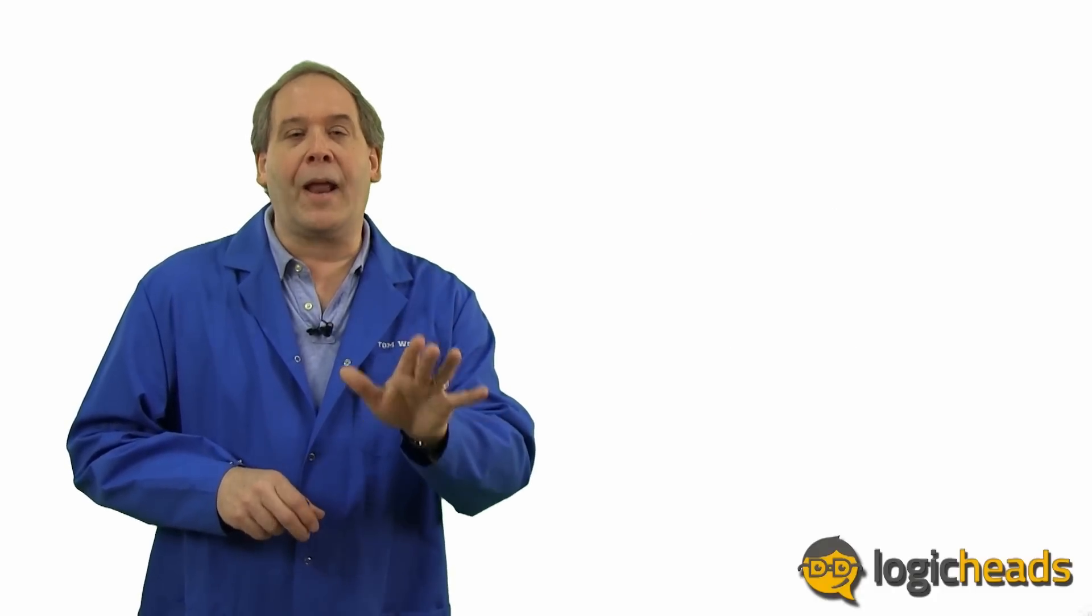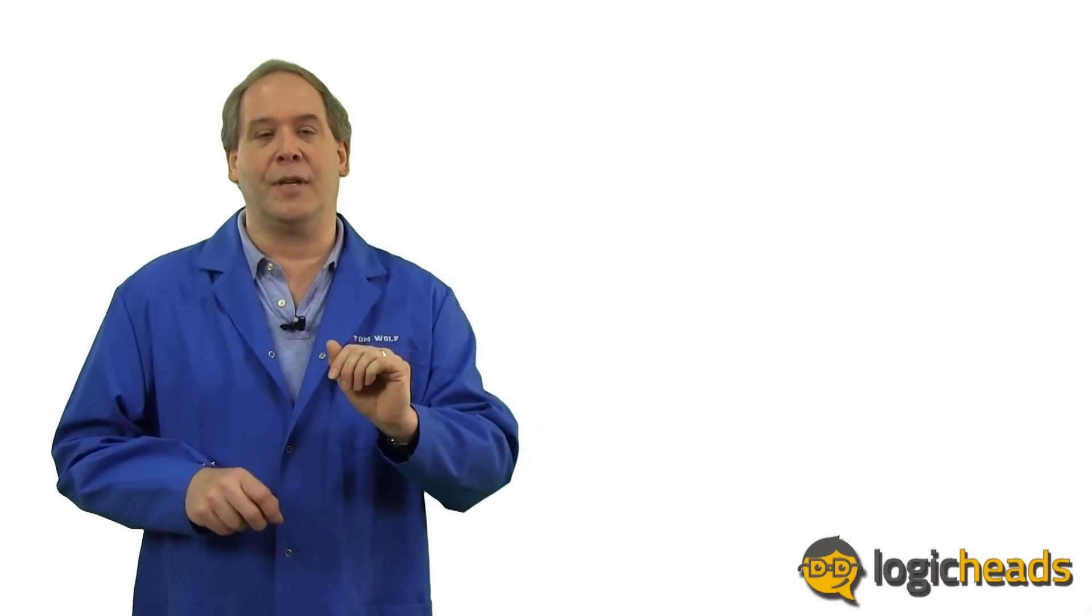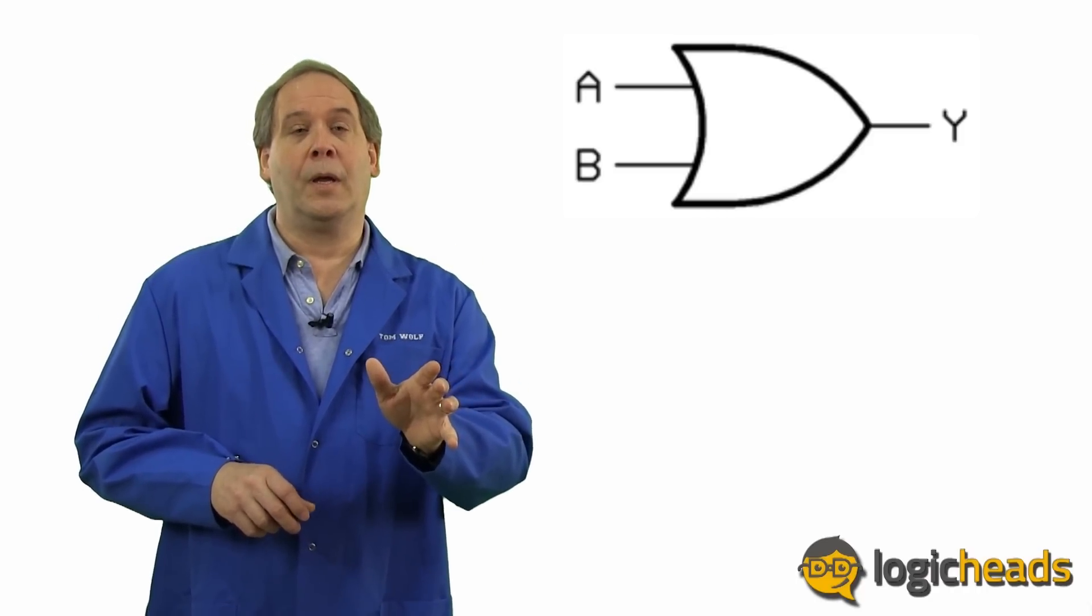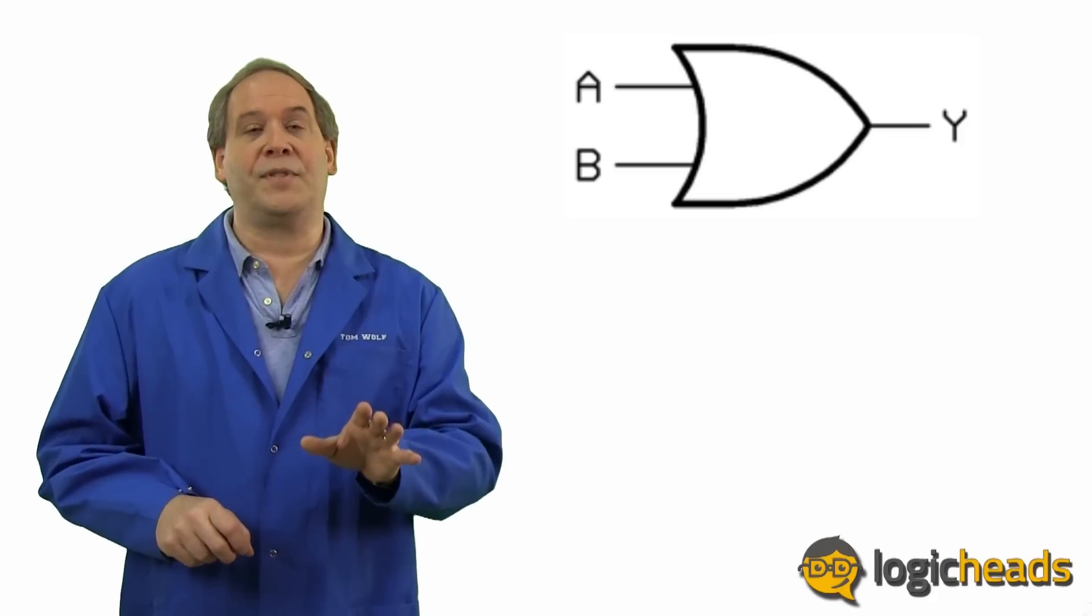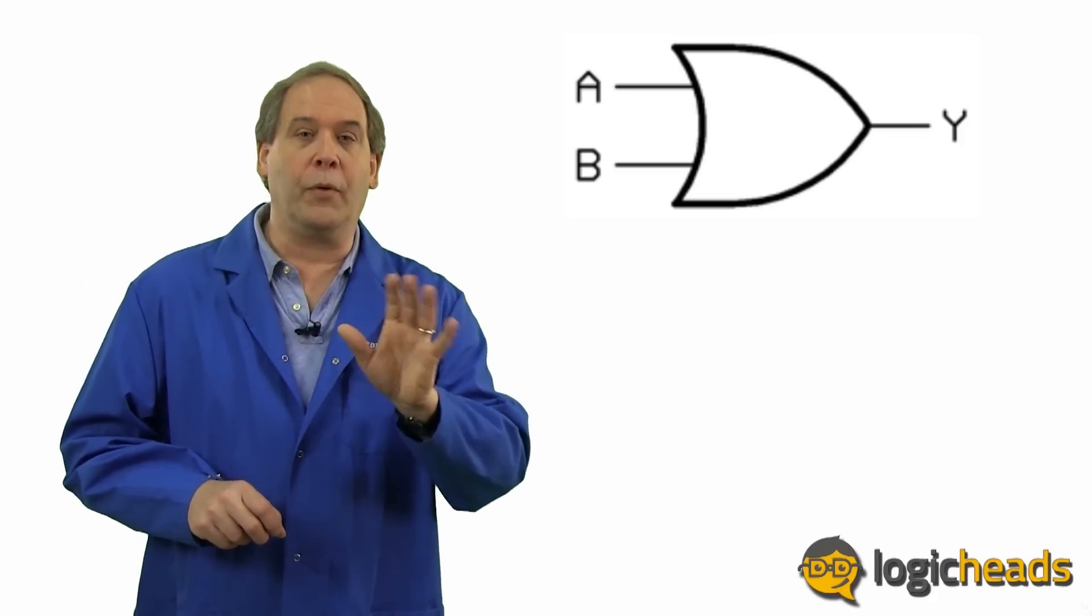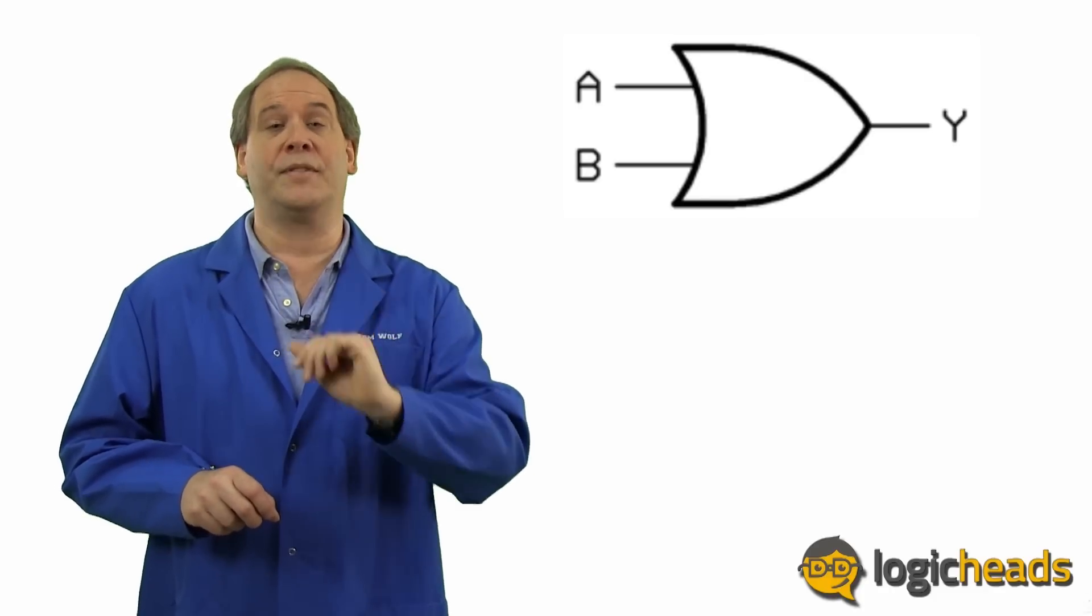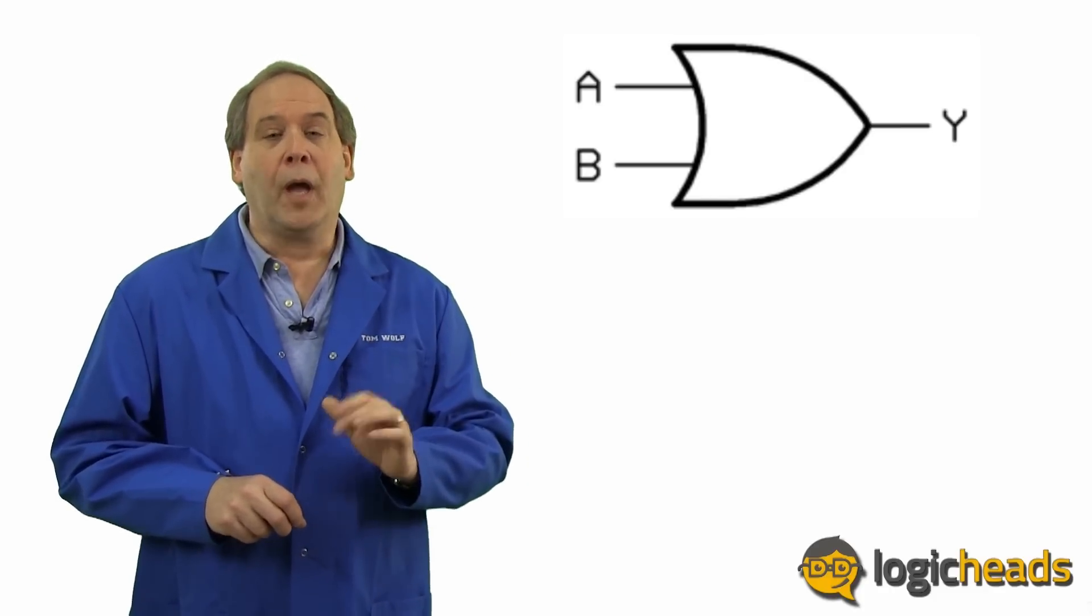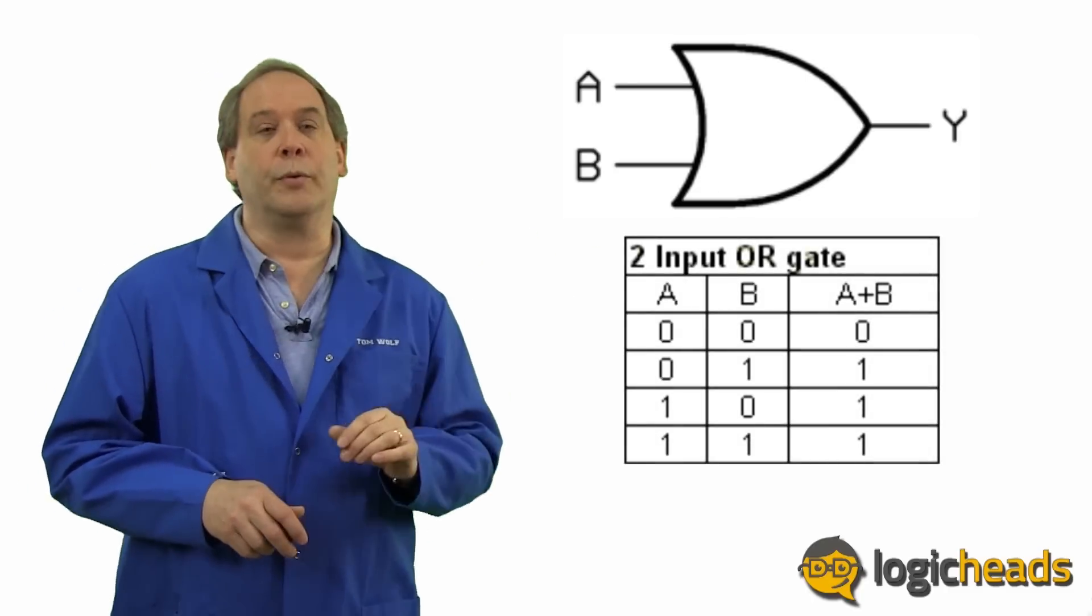Now that you understand binary and how to represent numbers in binary, let's take a look at some logic gates. Introducing the OR gate. It does just what the name says. If either A or B, or both of them, is a binary 1, then the output is a binary 1. If this isn't true, then the output is 0. And we can show this in something that we call the truth table.